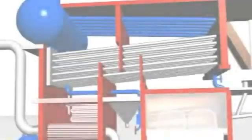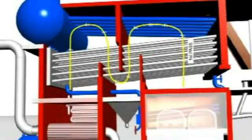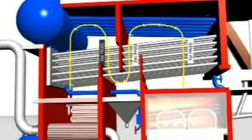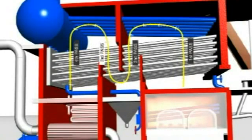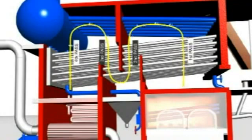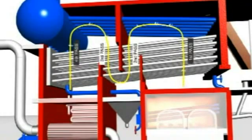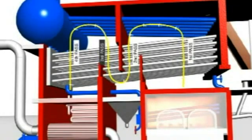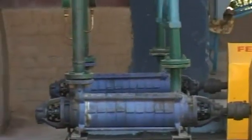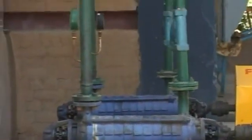The flue gas passes over the bank tubes for the first, second, third, and fourth passes, and is sent out to the waste heat recovery unit, which includes the air preheater and economizer. A feed water pump supplies water through the waste heat recovery economizer to the boiler drum.